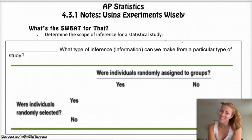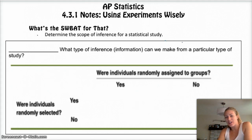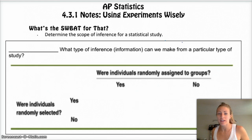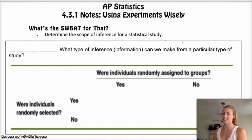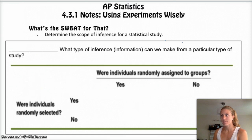Hi, AP Stats. Hope you guys are having a great day. Today we are moving on to Chapter 4, Section 3, Day 1 — and the last day as well — of the Practice of Statistics. We're going to talk about scope of inference and how do you use experiments wisely. What are you allowed to conclude from experiments that you perform? And actually observational studies as well.